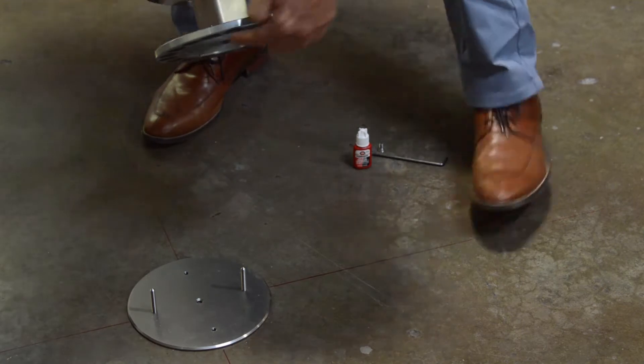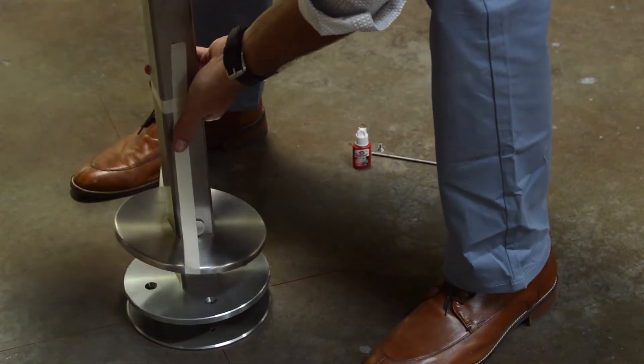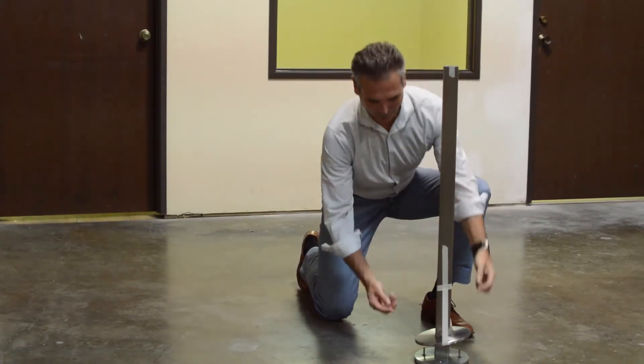Take your post with the four holes. You're going to align it to where the pins are. So now that we've got your post in place.